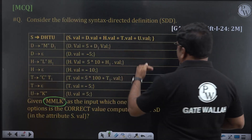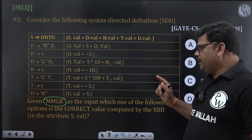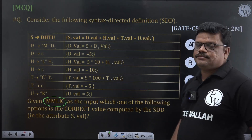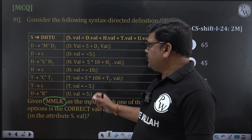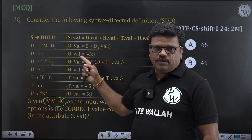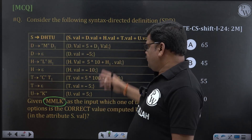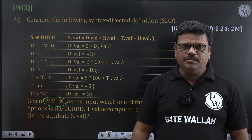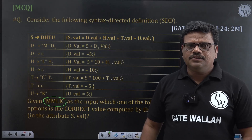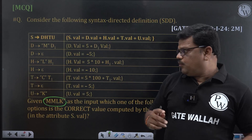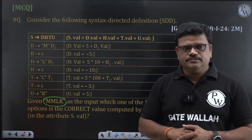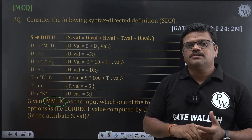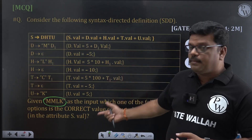Given MMLK as the input, which of the following options is the correct value computed by the SDT — specifically, what is the value of S.val from this SDT for this input? There are many similar questions; this is a repeated question type found in previous papers. Whenever any SDT question is given, first we need to construct the parse tree, then evaluate from the parse tree based on the semantic rules.